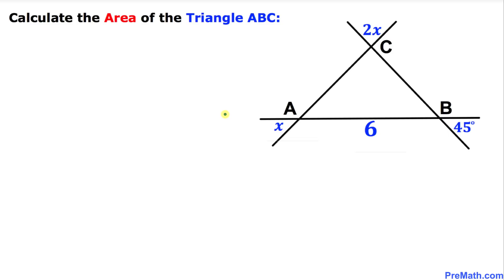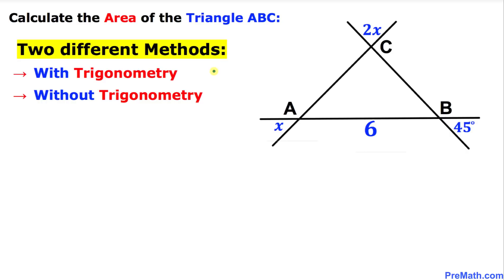Welcome to pre-math. In this video tutorial, we are going to calculate the area of triangle ABC, as you can see in this figure. One side of this triangle has been given as 6 units, and this angle is 45 degrees. We are going to solve this problem with two different methods: one with trigonometry, and the other one without trigonometry.